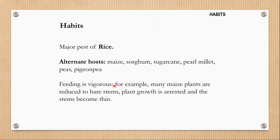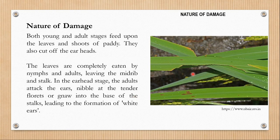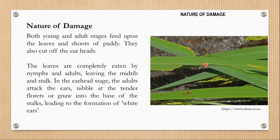Feeding is vigorous. Like most grasshoppers, it feeds a lot. On many plants, when it attacks, they can be reduced to just bare stems. Plant growth is arrested and the stems become thin. You can see how Hieroglyphus banian can damage rice plants or any alternate host plants. When this pest attacks, it feeds on the parts of the leaf. Most of the soft parts of the leaf are gone. Both young and adult stages feed upon the leaves and shoots of paddy. They also cut off the ear heads.